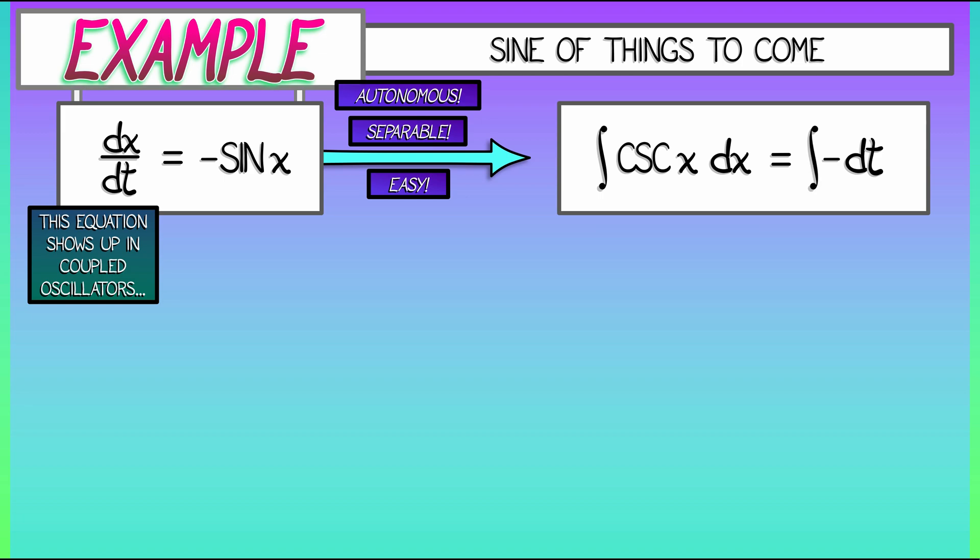Tell you what. You do the left side. I'll do the right. I'm done. The integral of minus dt is minus t, plus a constant. Are you done? Are you done with the left-hand side? You remember the integral of cosecant of x? Ooh, yeah. That's a tough one. That one is not obvious at all.